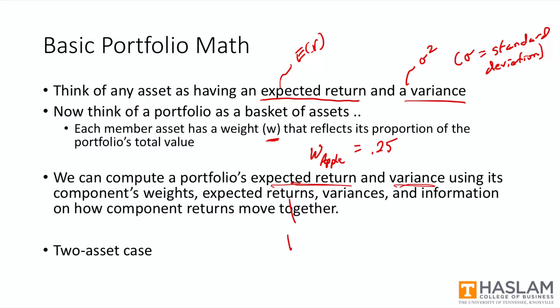So we can compute expected RP, expected return for the portfolio, and sigma squared P, the portfolio variance. Now as I said earlier, to keep things simple, we're going to be focusing on a two-asset case. But all of the concepts that I cover will extend to multiple assets. It's just the formulas for expected return and variance become longer and more complex as we add assets.